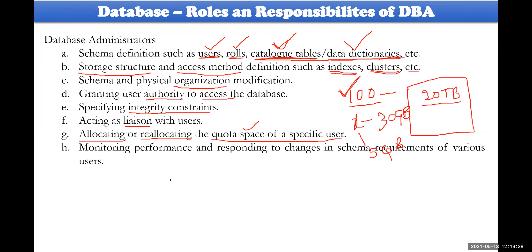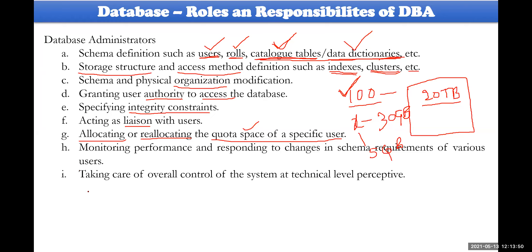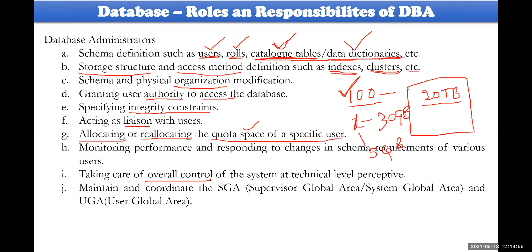Finally, the DBA is responsible for performance analysis and overall control of databases for the entire organization. There are two important storage areas — SGA (System Global Area) and UGA (User Global Area) — which will be discussed in unit number five. Both areas are maintained and coordinated by the database administrator.